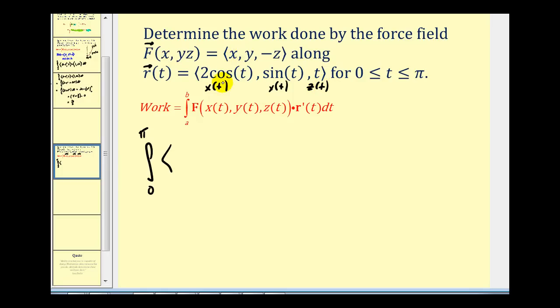The x component is equal to x, that'll be two cosine T. The y component will be y, so it's sine T. And the z component is the opposite of z, so that'll be negative T.